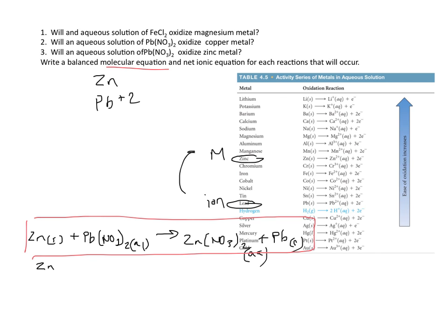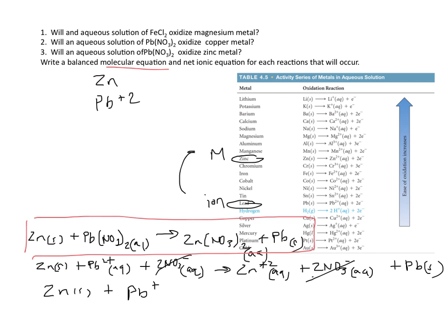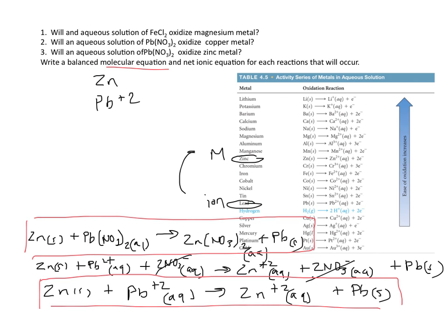So in order to get our net ionic, once again, you're going to break apart all the ions that are present. And then you cancel out anything that shows up on both sides. So in this case, the nitrates are what show up on both sides. So the net ionic equation is going to look like the following. So now you have your net ionic equation.